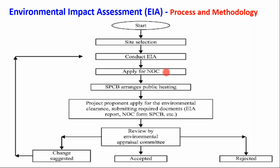The next step is to apply for an NOC — No Objection Certificate. If in the EIA all adverse environmental impacts are at a negligible level or within the permissible levels of the State Pollution Control Board or Central Pollution Control Board, they can grant this NOC for that particular site. Then the SPCB arranges a public hearing to raise awareness about the EIA from the public's point of view.